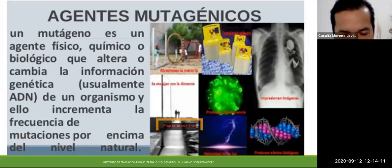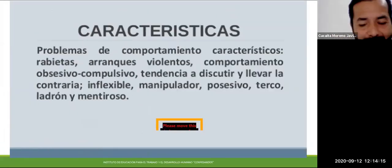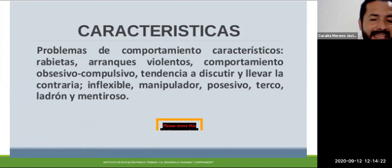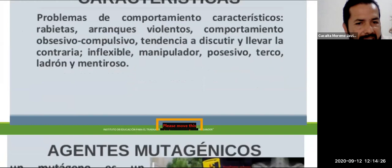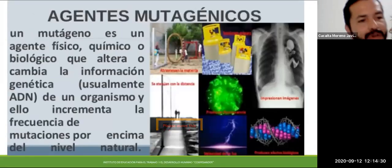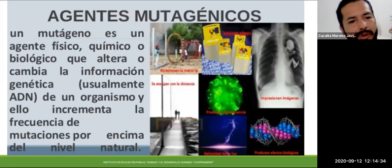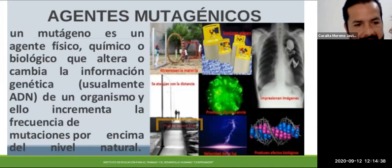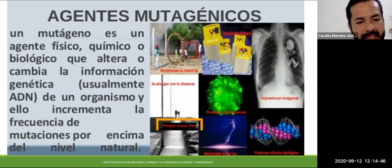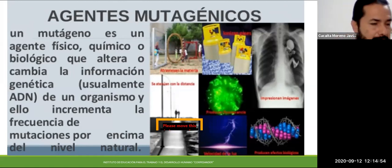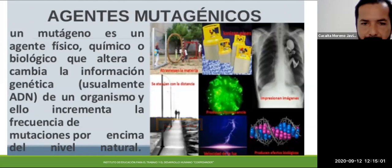También tienen problemas de comportamiento: muchas rabietas, arranques violentos, comportamientos obsesivos compulsivos, tendencia a discutir, inflexibles, manipuladores, posesivos, tercos. Son características de esta enfermedad que afectan la parte comportamental. Ahí vemos cómo solo le falta una parte al cromosoma y cómo afecta no solo la parte física sino la parte comportamental. ¿Y qué ocasiona todas estas mutaciones? Hay diferentes agentes mutagénicos: físicos, químicos o biológicos. Eso puede alterar la información genética, es decir el ADN, causando que se incrementen las mutaciones por encima del nivel natural. Todos podemos tener mutaciones dentro de un rango normal, y nosotros estamos viviendo de mutaciones que hacen parte de la evolución.